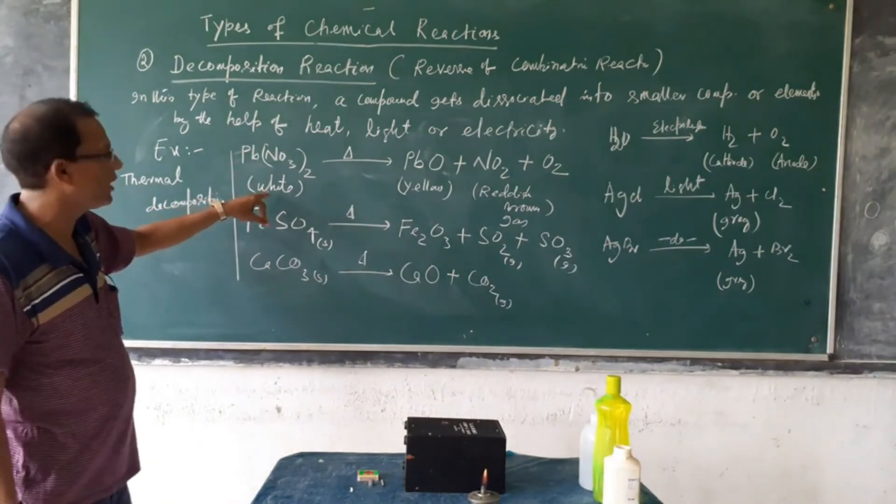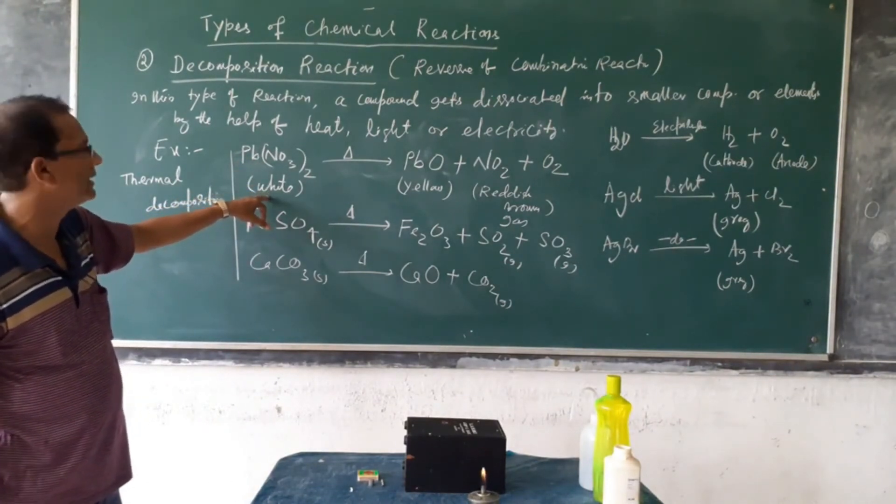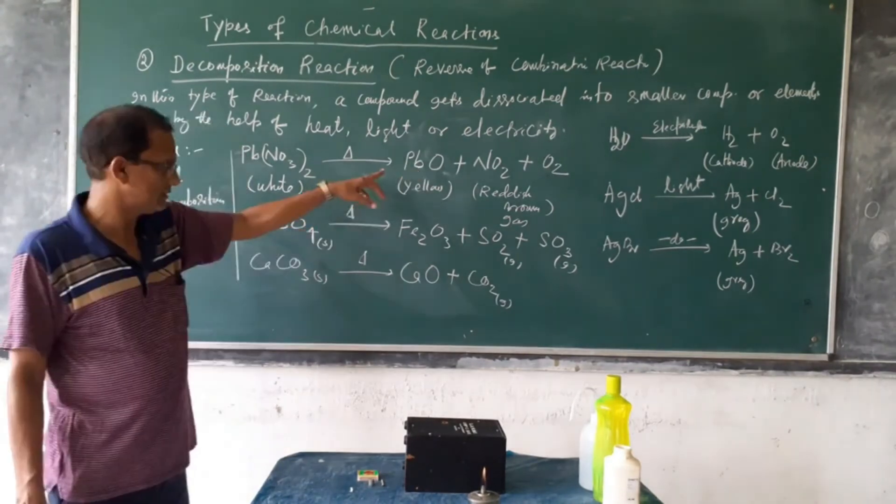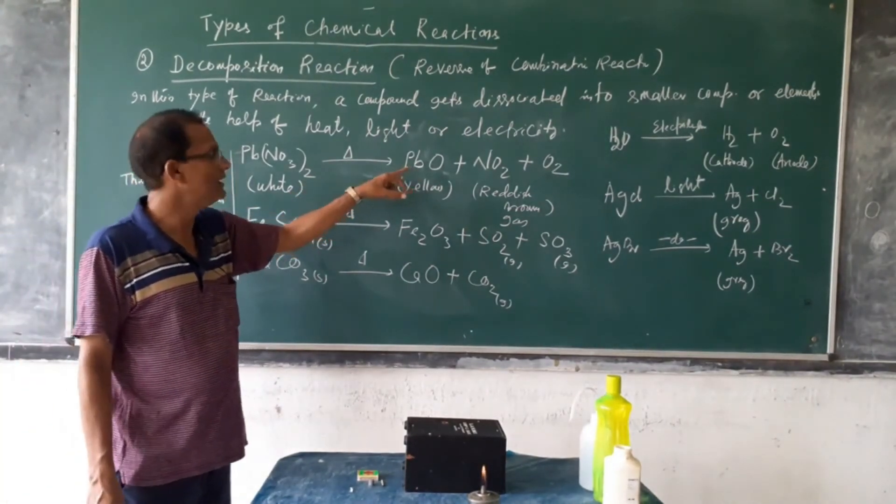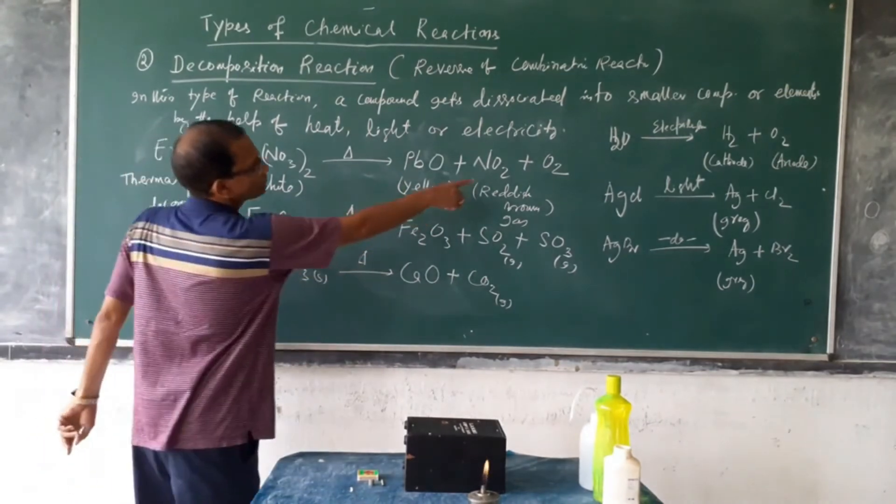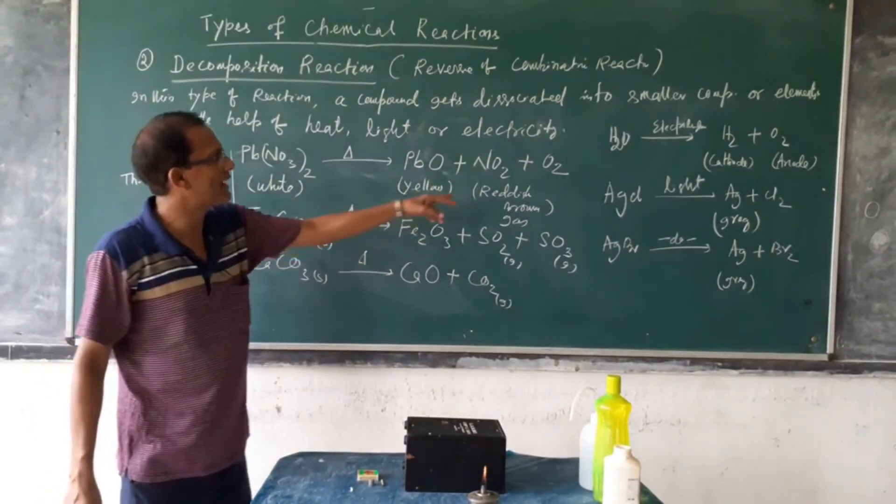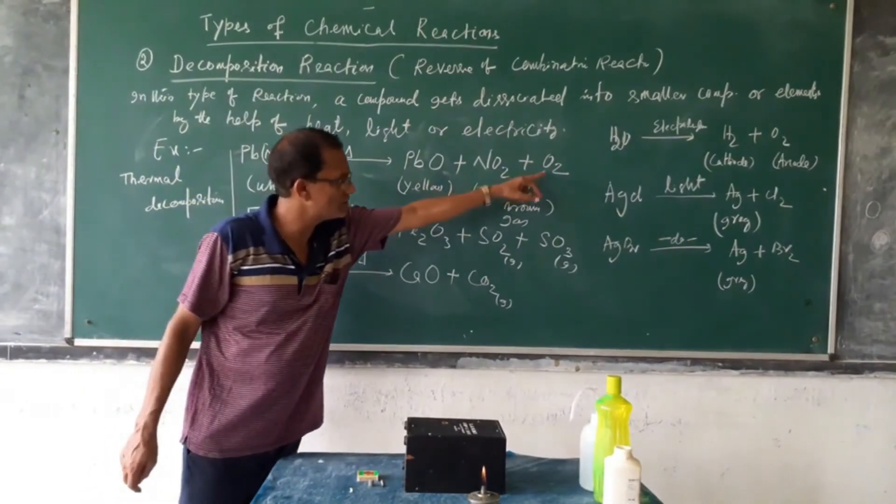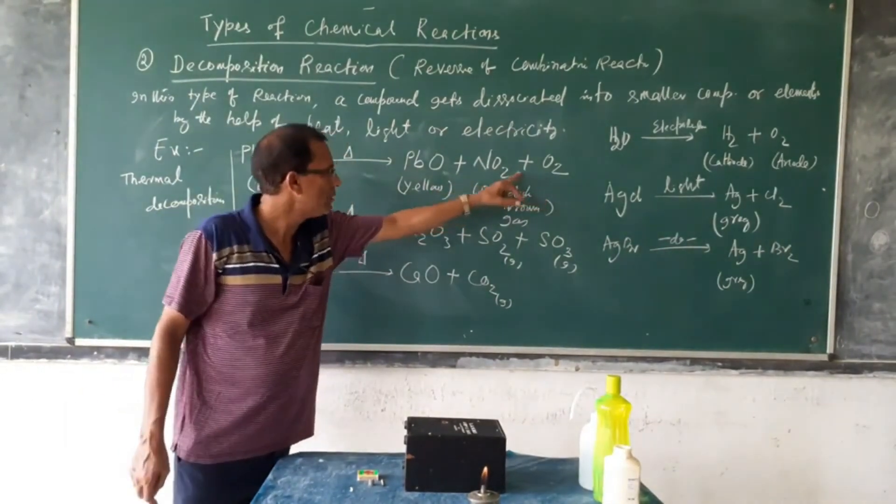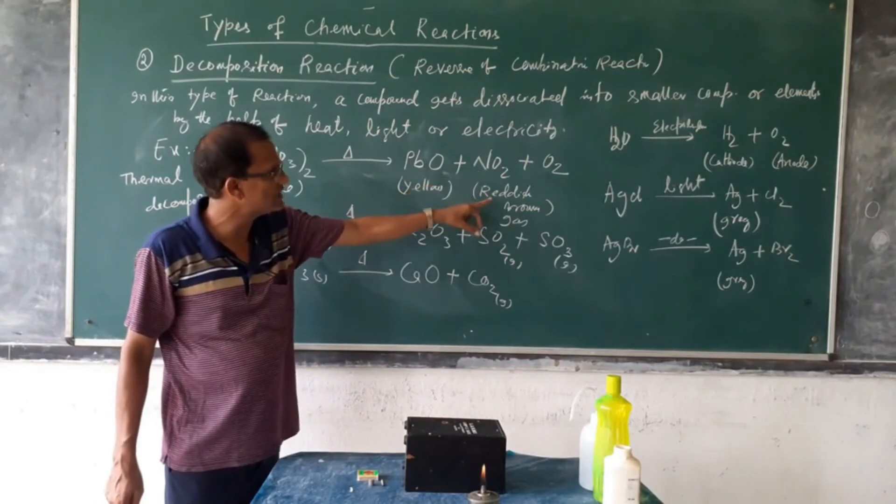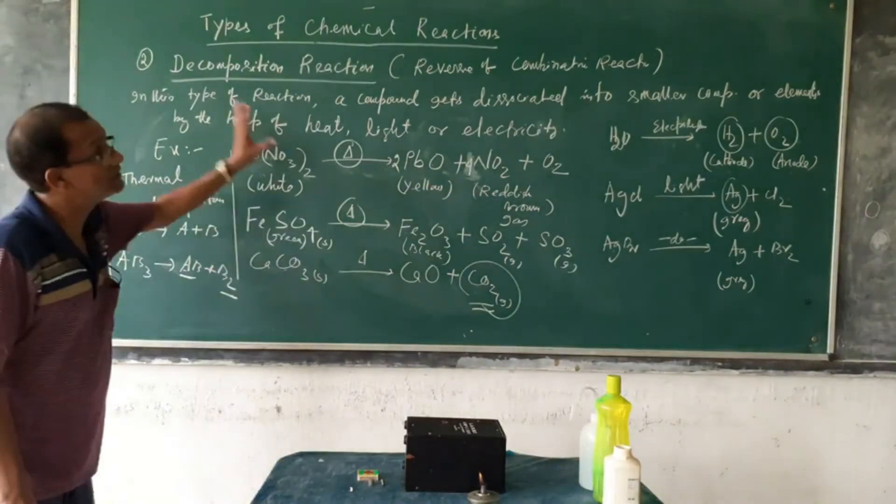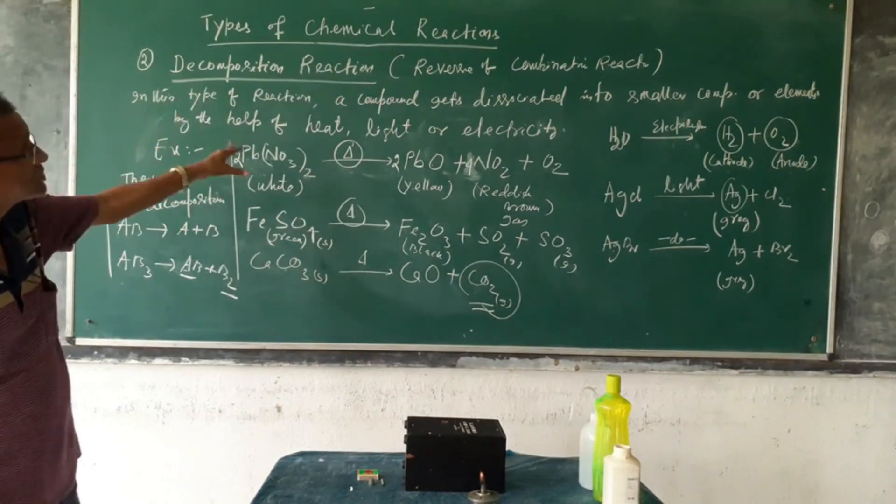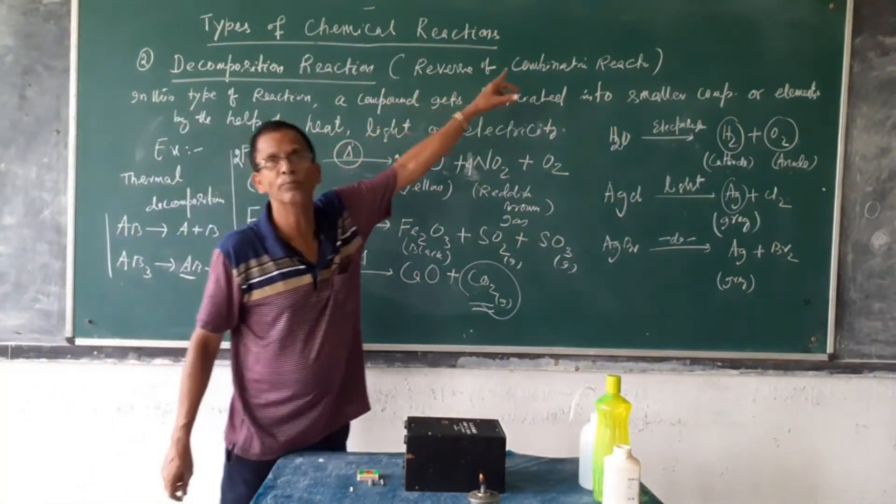Lead nitrate. Color is white. When it will be heated, produces yellow solid lead oxide. That is yellow solid lead oxide and reddish brown gas, NO2 is formed, with the formation of oxygen. Oxygen is not visible but NO2 gas is reddish brown. These are the characteristics of decomposition reaction which is just opposite of combination reaction.